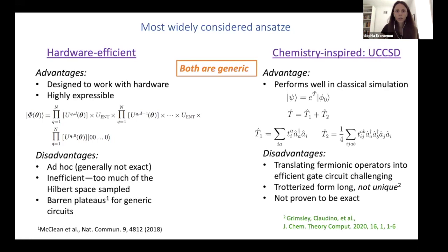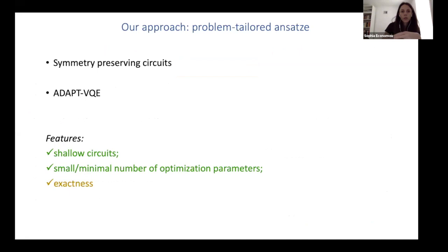So the bottom line of this slide is that both of these ansatz are generic in some sense. On this side, this is entirely generic entirely given by the hardware on this side for any chemical problem, UCCSD tells you just choose the ansatz and then optimize your parameters, but it doesn't know anything else about your Hamiltonian.